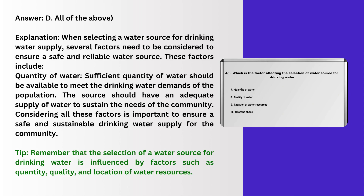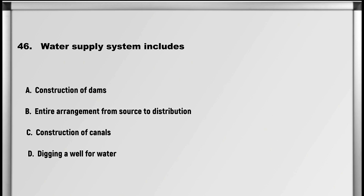Explanation: When selecting a water source for drinking water supply, several factors need to be considered to ensure a safe and reliable water source. These factors include the quantity of water — sufficient quantity should be available to meet the drinking water demands of the population. Considering all these factors is important to ensure a safe and sustainable drinking water supply for the community. Tip: the selection of a water source for drinking water is influenced by factors such as quantity, quality, and location of water resources.